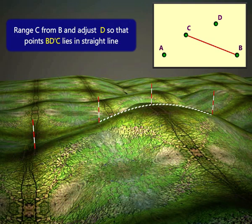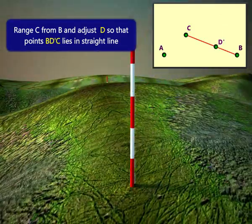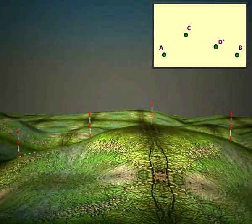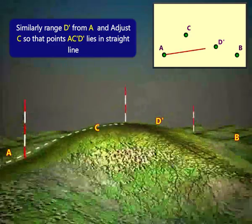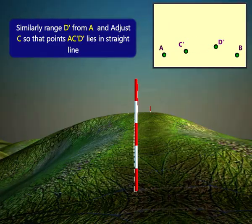Range C from B and adjust D so that point BDC lies in straight line. Similarly, range D' from A and adjust C so that points ACD' lies in straight line.